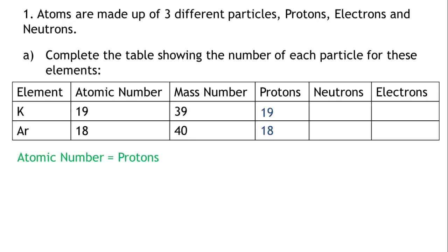The number of protons equals the number of electrons in an atom. Therefore, the number of electrons in potassium, K, is 19, and the number of electrons for argon, Ar, is 18.